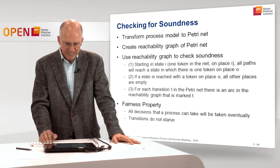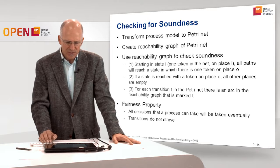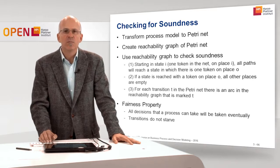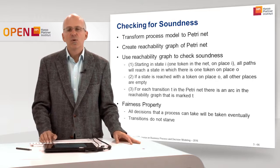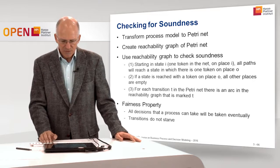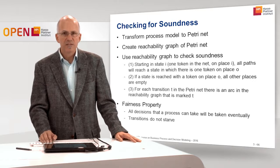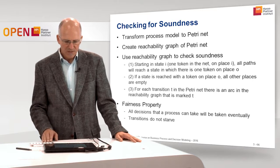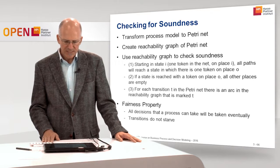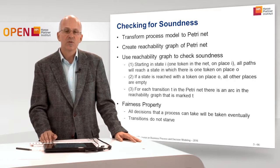First, we need to check if starting in state i — so that's one token in the net, exactly on place i — all paths will reach a state in which there is one token on place o. Regardless of what I do, I will always reach a state with a token on o. Second, if a state is reached with a token on place o, all other places are empty, to avoid remaining activities and livelock. Third, for each transition t in the Petri Net there is an arc in the reachability graph marked t, so there are no dead transitions.